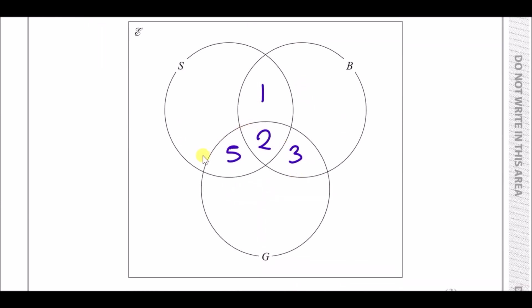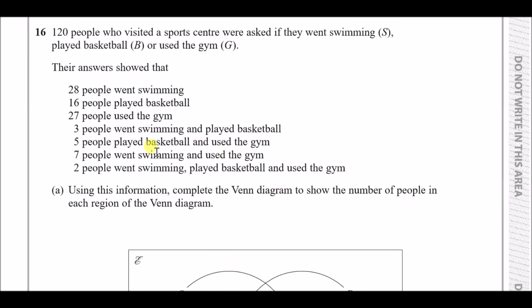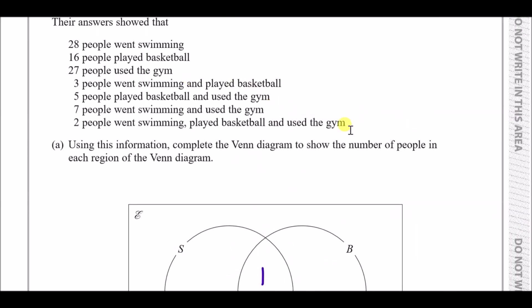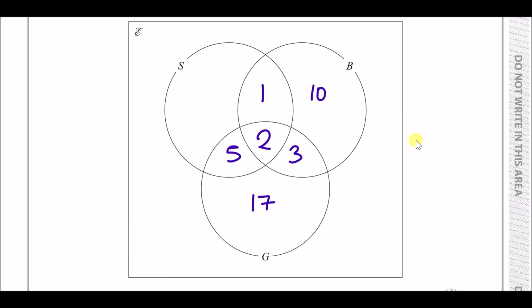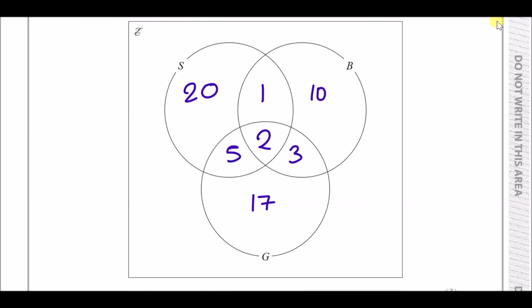Now for individual elements: 27 used the gym, and 5 plus 2 plus 3 equals 10 in overlaps, leaving 17 for gym only. 16 played basketball; 1 plus 2 plus 3 equals 6 in overlaps, leaving 10 for basketball only. 28 went swimming; 1 plus 2 plus 5 equals 8 in overlaps, leaving 20 for swimming only.